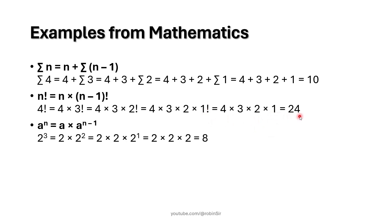We get the answer as 24. Another example: a to the power n can be written as a into a to the power n minus 1 — again we are defining this expression in terms of itself. For example, 2 to the power 3 is 2 into 2 to the power 2; 2 to the power 2 is 2 into 2 to the power 1; for 2 to the power 1 we have a direct answer of 2, the recursion stops, and we get the answer 8.